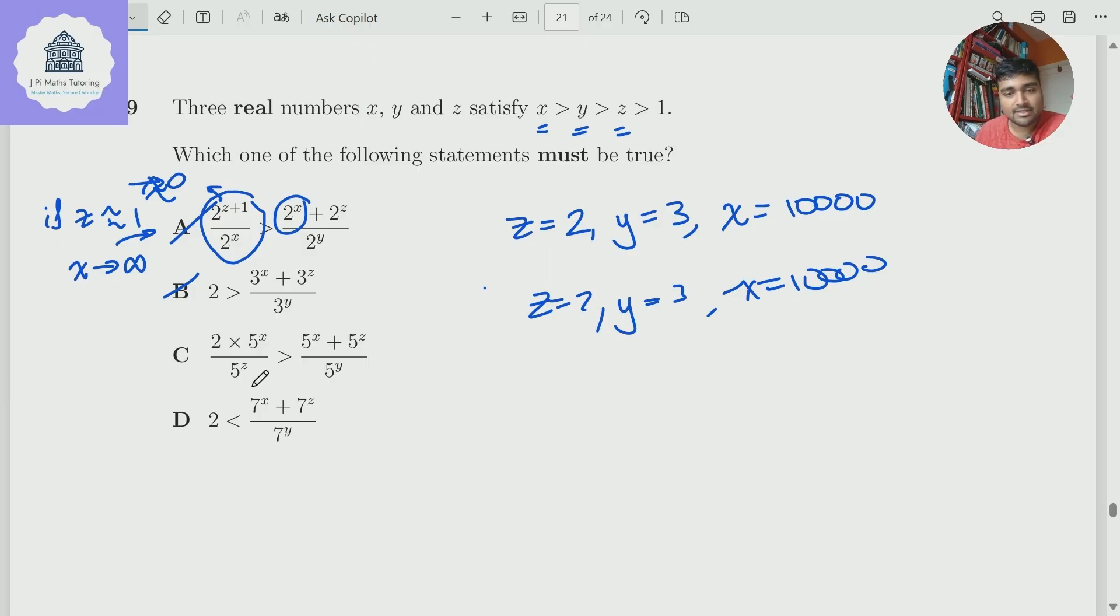C, we've got 2 times 5 to the x over 5 to the z is bigger than 5 to the x plus 5 to the z over 5 to the y. So the left-hand side here is large number divided by small number. So that's going to be very large. And on the right-hand side, I've got large plus small divided by medium size. So this looks possible because this is obviously large, but this is also large, but we've got this 2 here. So maybe this 2 is doing something for us. So actually, it turns out that c is going to be the correct answer here.